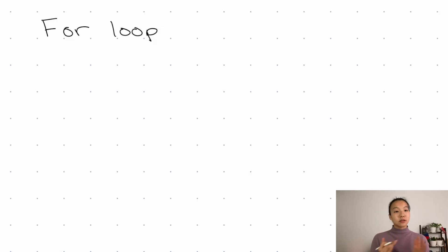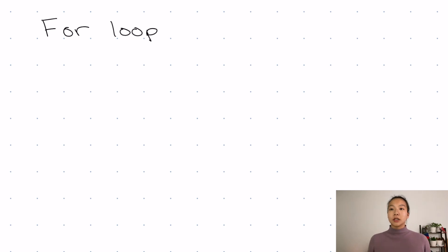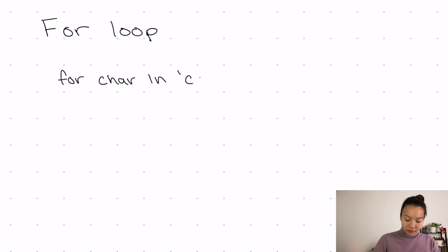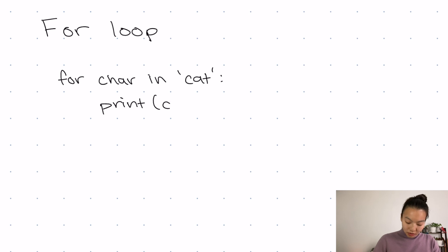In this lesson, we'll be discussing both of them. The first type of loop we're going to discuss is known as a for loop. A for loop allows you to iterate over a sequence. This might be looping through each character of a string. For example, I might have some code that says: for char in cat, print char.